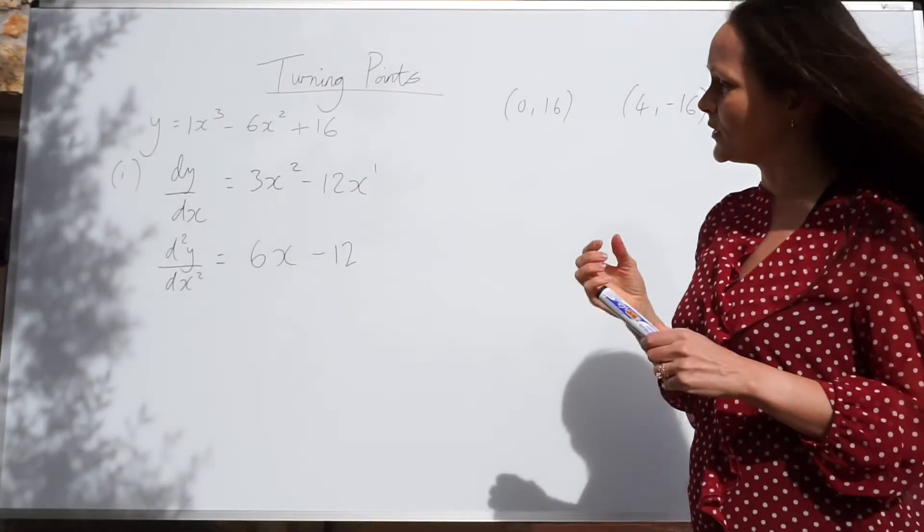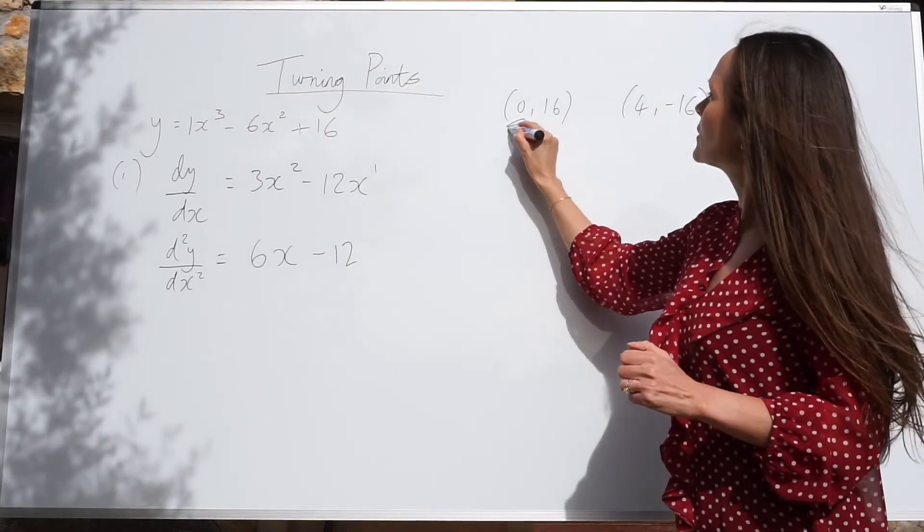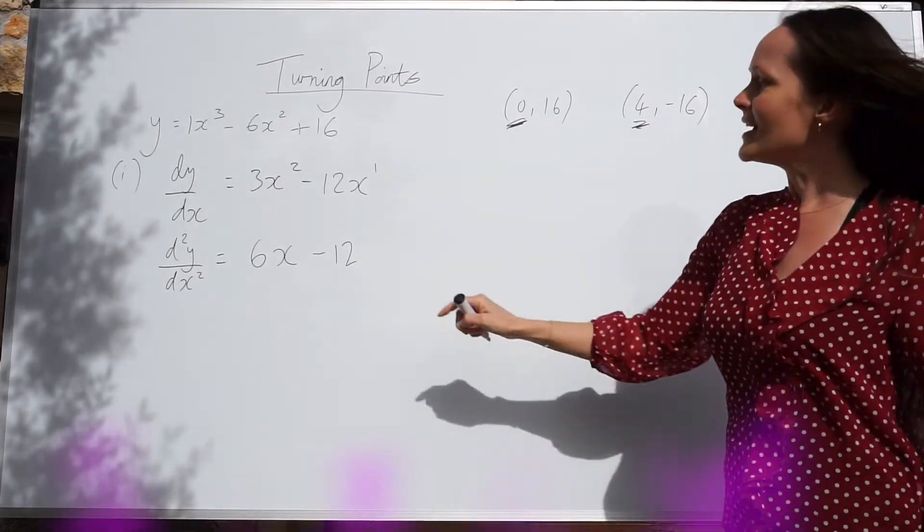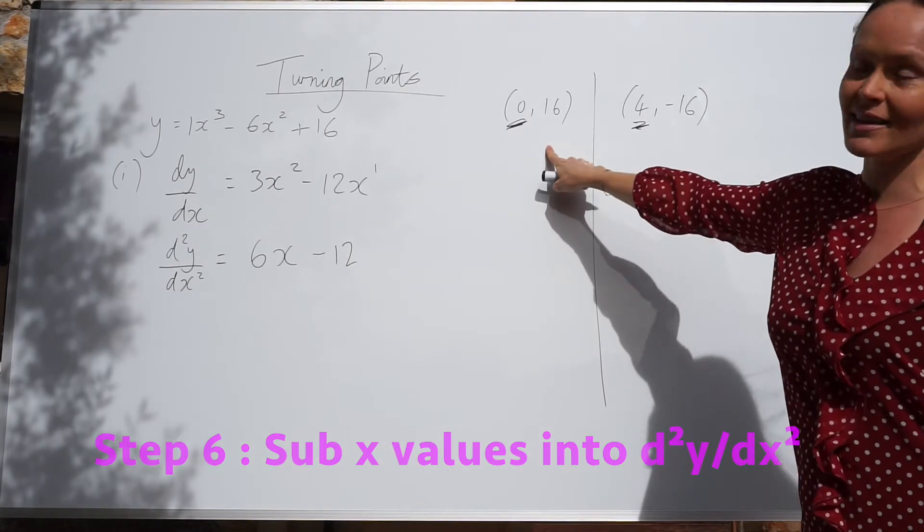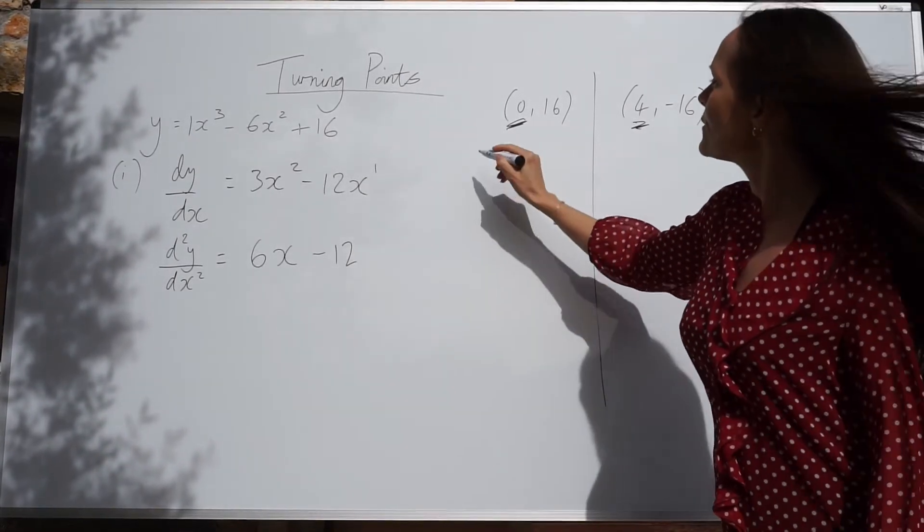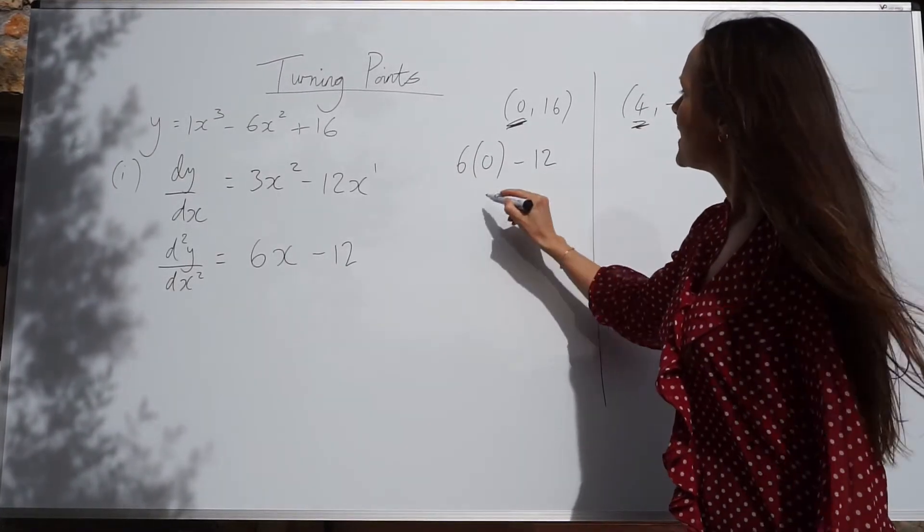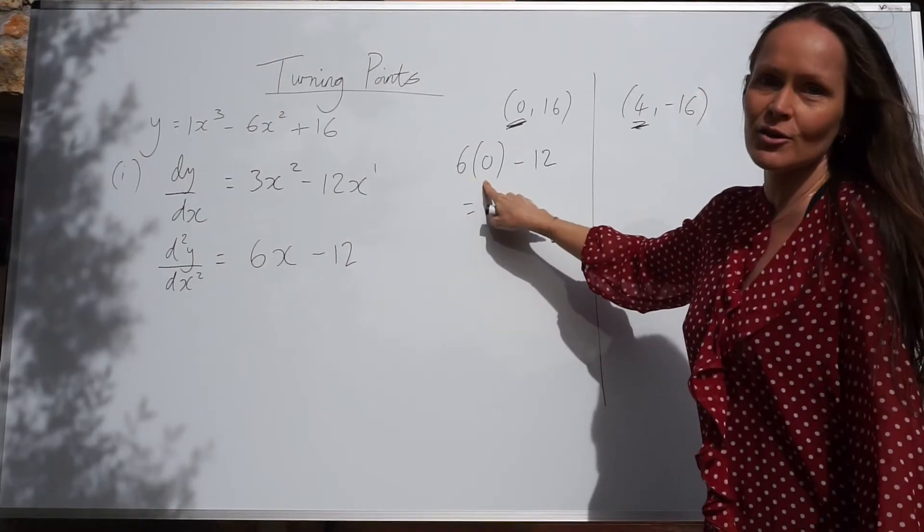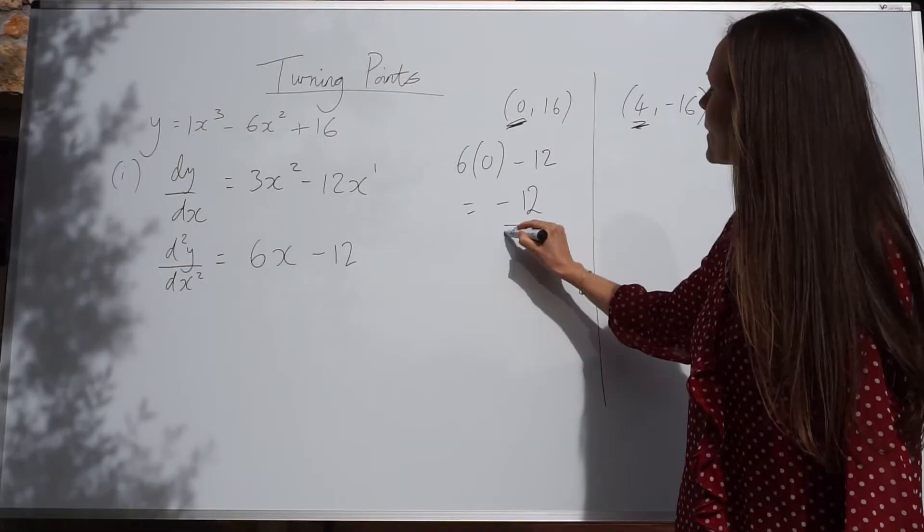So, next what you need to do is substitute your x values that we found earlier into this expression. So let's start with this turning point here. So, x is equal to 0. If I change x to 0 here, it becomes 6 times 0 is just 0, and then if we take away 12, we're left with negative 12.